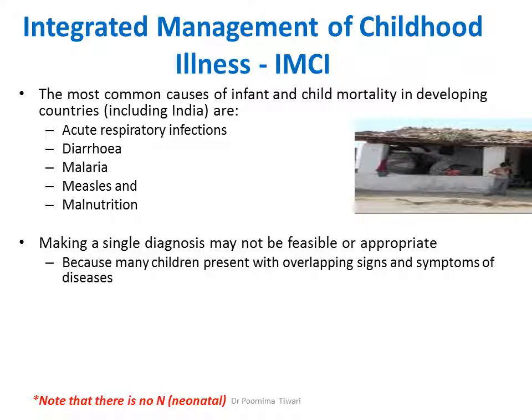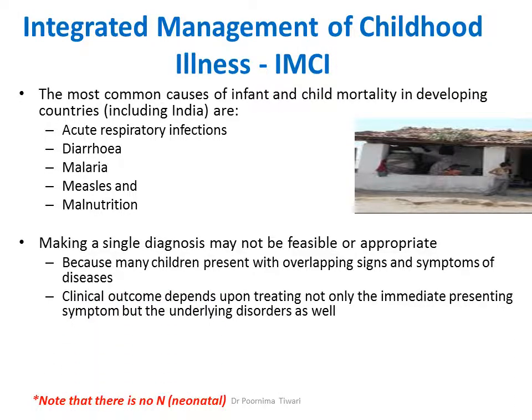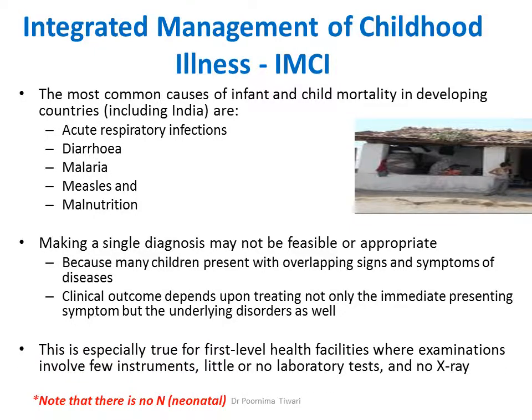For example, a child who is malnourished may also have pneumonia or diarrhea. So it is not appropriate to make a single diagnosis. Instead, it is better to put the child into a category because the clinical outcome depends upon treating not only the immediate presenting symptom but also the underlying disorders.